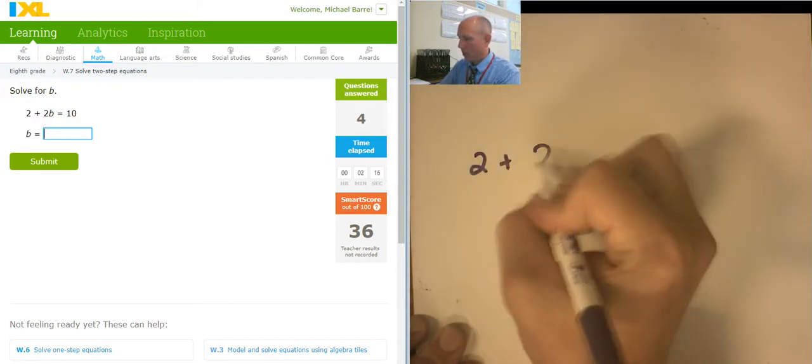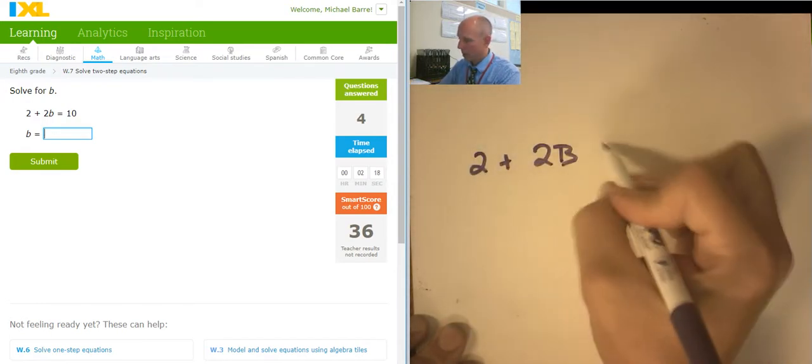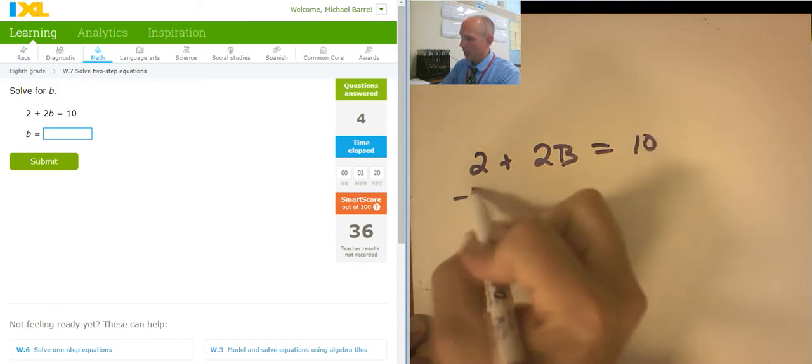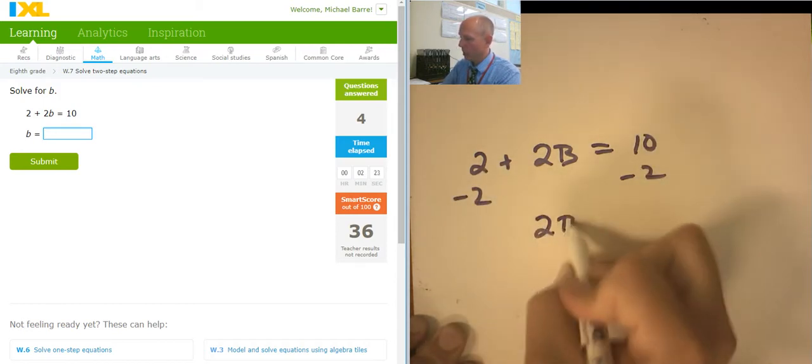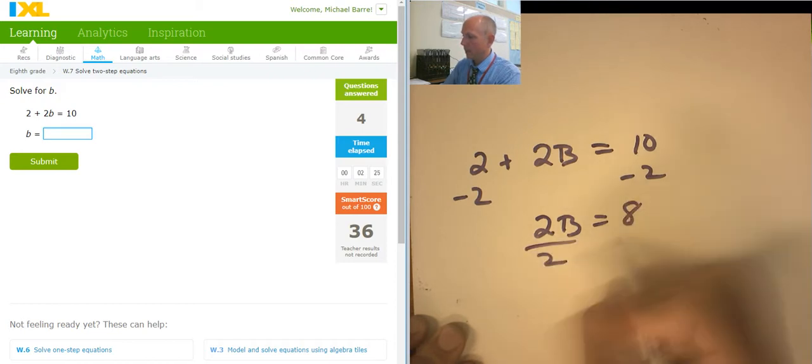2 plus 2b equals 10. I would like to subtract 2 from both sides. So 2b equals 8. I would like to divide both sides by 2. So b equals 4.